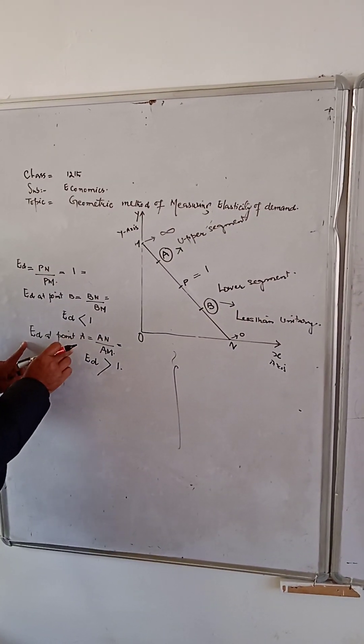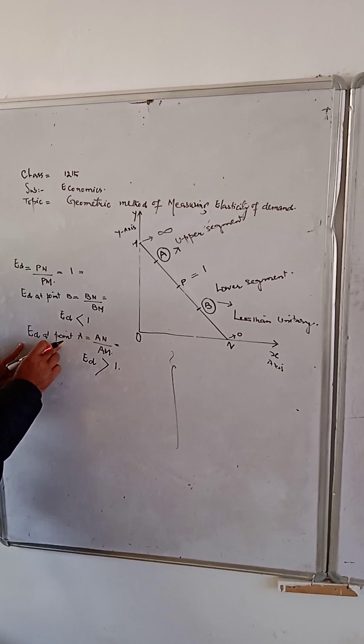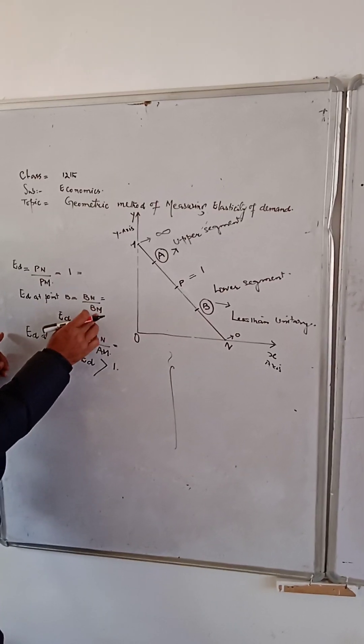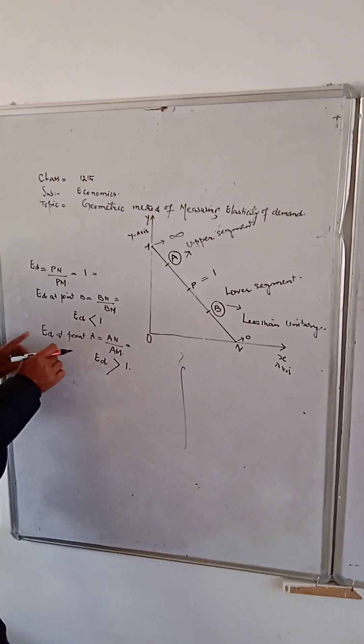Mathematically, we write that B-N divided by B-M is less than 1.